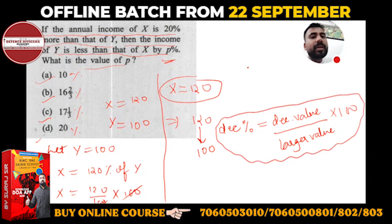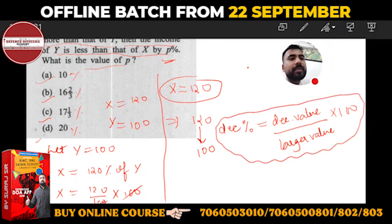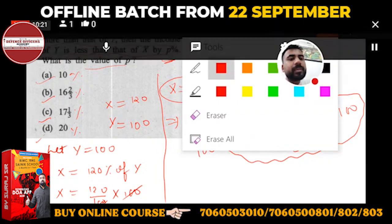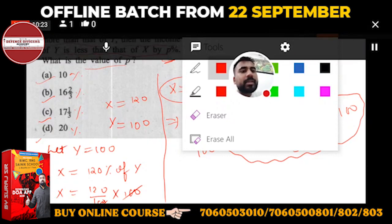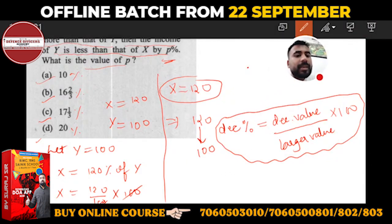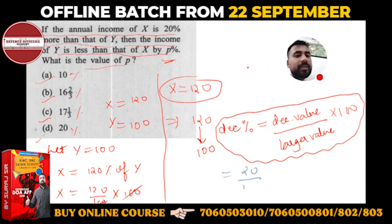If you put values here, you'll get an answer. Very simple, just put values and you will get the answer. So decreasing value is 20, larger value is 120, into 100. So 20 upon 120 into 100... 50 upon 3 percentage.